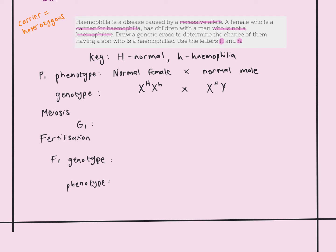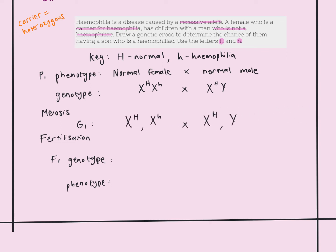Looking at the gametes the woman can produce: she can give either X superscript H — a normal allele — or X superscript h, which is why she is considered a carrier. The male can give either X superscript H, meaning he'd pass a normal allele to a daughter, or a Y chromosome, meaning he'd have a son. The woman's genotype then determines whether that son has hemophilia or not.